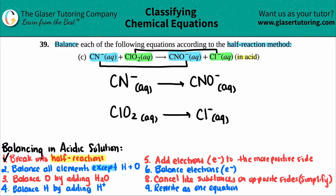For the rest of the steps, we do each step for both half reactions before moving on to the next. Step two: balance all elements except hydrogen and oxygen. I'm looking at carbon, nitrogen, and chlorine. I have one carbon on each side — balanced. One nitrogen on each side — balanced. One chlorine on each side — balanced. So step two is already done for both half reactions.